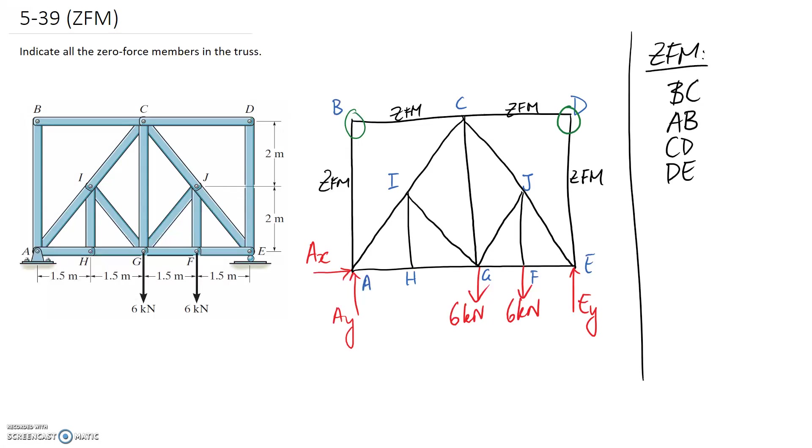Alright, so I don't think we have any more instances where we have just two members coming together. So we're not able to apply that rule anymore. So the next rule that we have is when we have three members coming together and two of them are in a line, the third one becomes a zero force. And again, that's provided we have no externally applied forces.